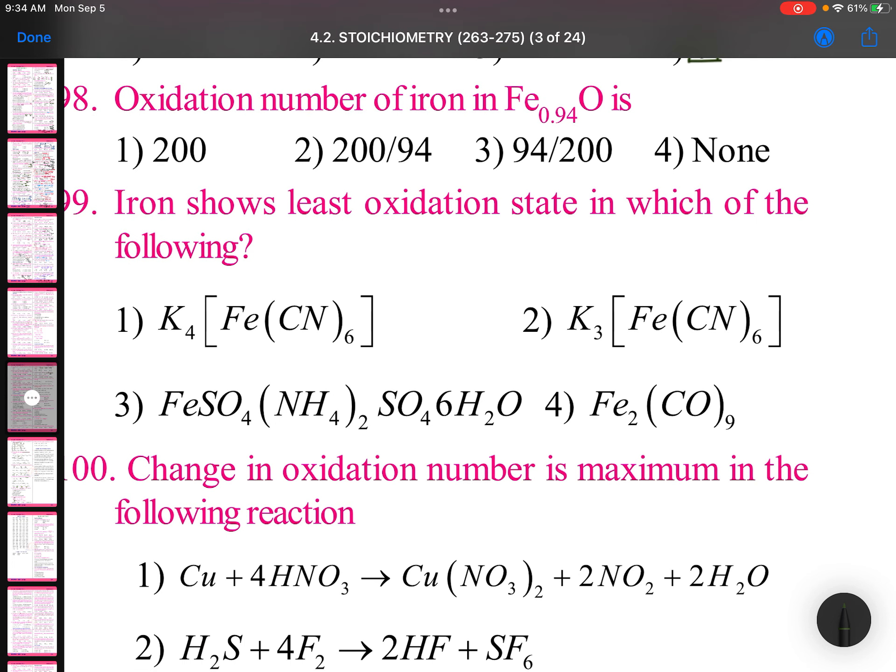Oxidation number of iron in Fe0.94O is: 0.94x, one oxygen is minus 2, equals 0. So 0.94x equals plus 2. x equals plus 2 by 0.94, or 200 by 94.